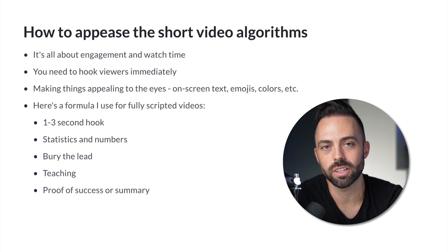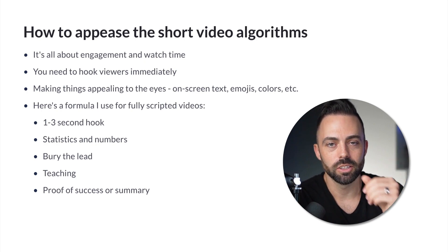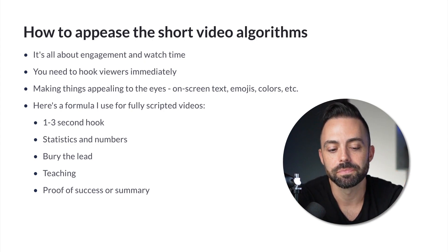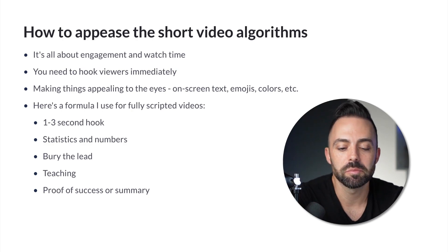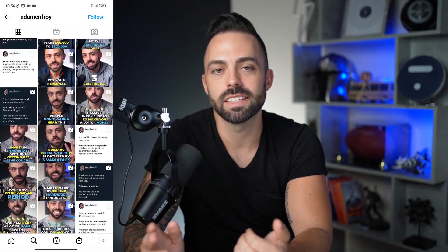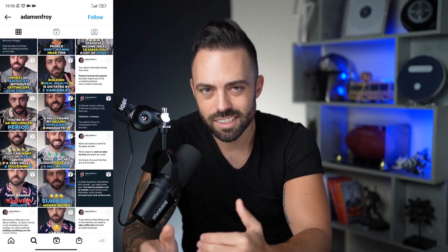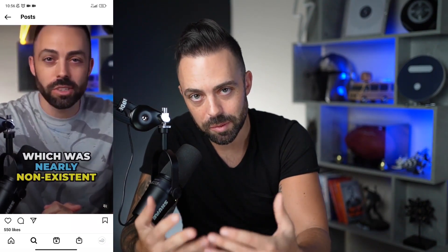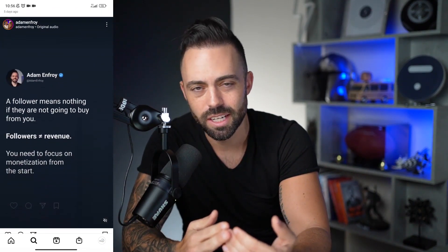You also want to bury the lead — don't give away all the information right away. Tell a story while keeping people engaged, prolonging the real answer till the end. Have some teaching and then proof of your success in the summary. It's basically: interesting hook sentence, statistics about your niche, burying the lead, giving examples without fully revealing the answer, then telling the answer and teaching something interesting about affiliate marketing or passive income.